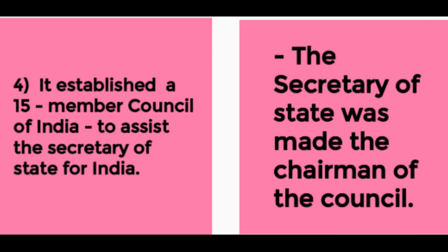These are the four most important features which the Crown introduced through the Act of 1858. To conclude, the Act of 1858 was however largely confined to the improvement of the administrative machinery by which the Indian government was to be supervised and controlled in England. But frankly, it did not alter in any substantial way the system of government that prevailed in India.